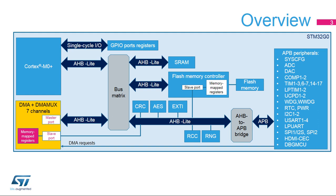The DMA channels can access any memory-mapped location, including AHB peripherals — for instance the CRC generator — AHB memories — for instance the SRAM — and APB peripherals — for instance the USART peripheral.